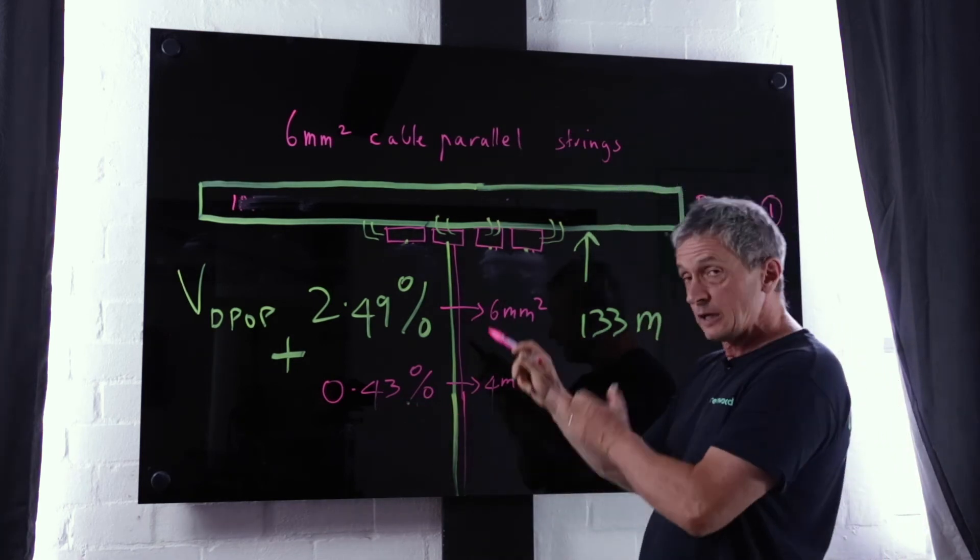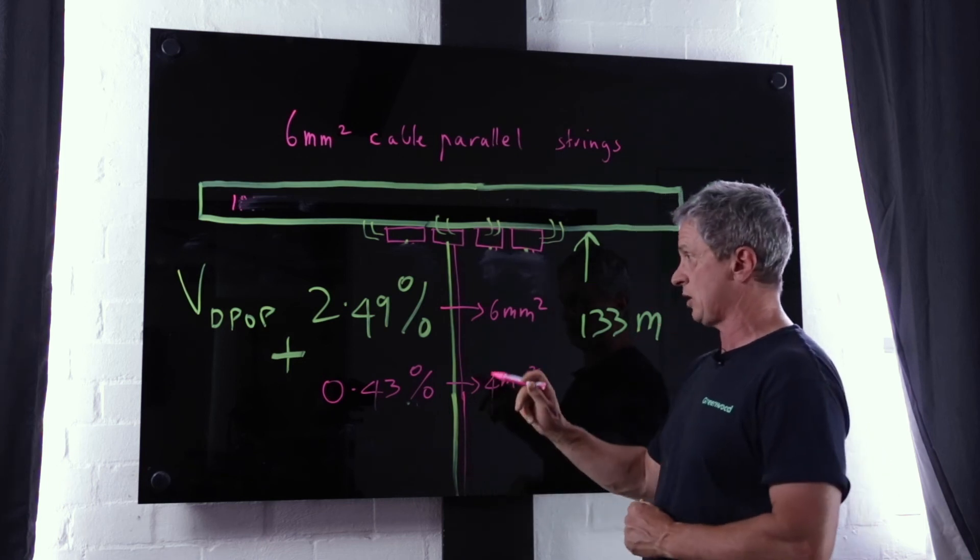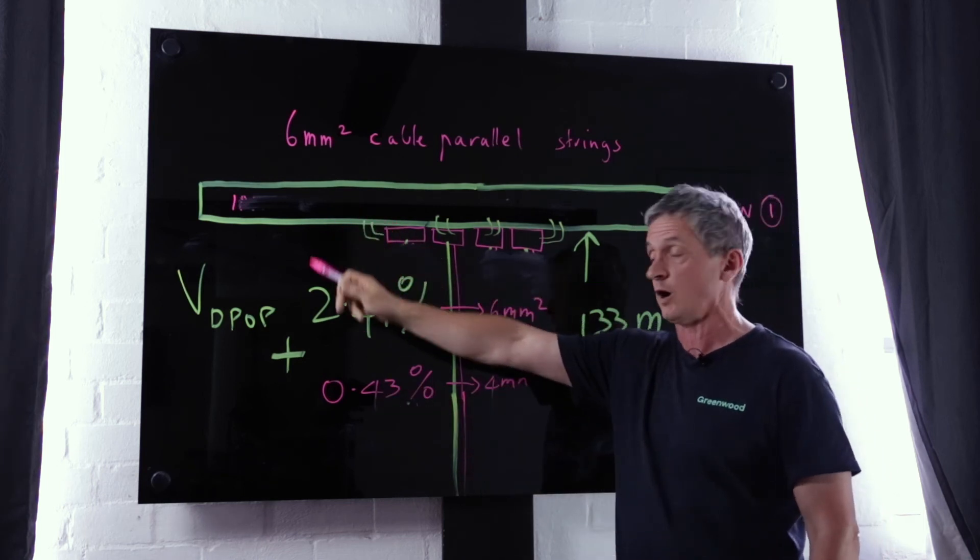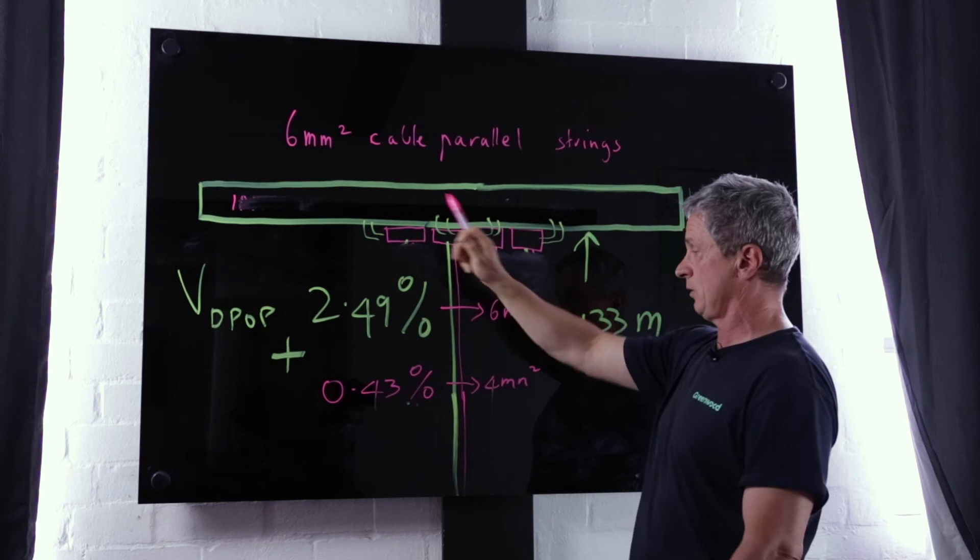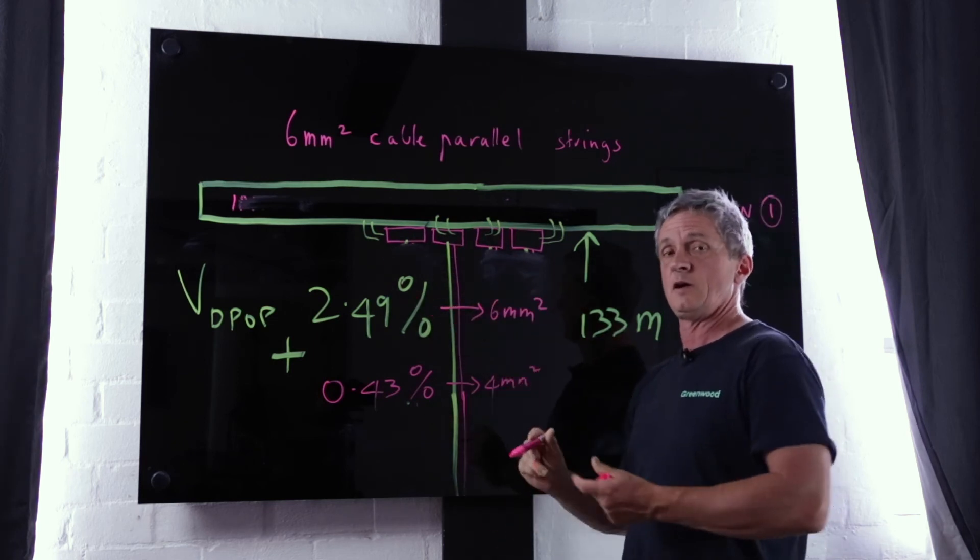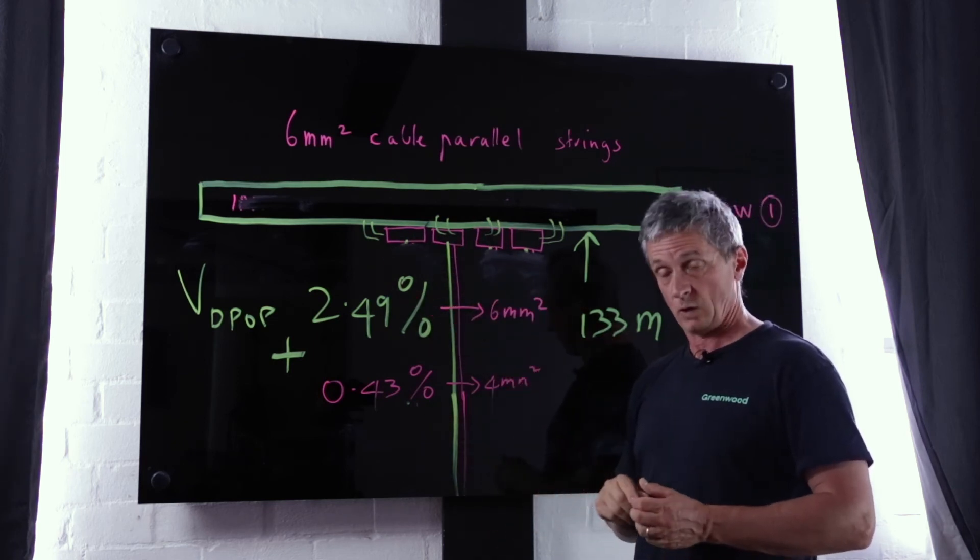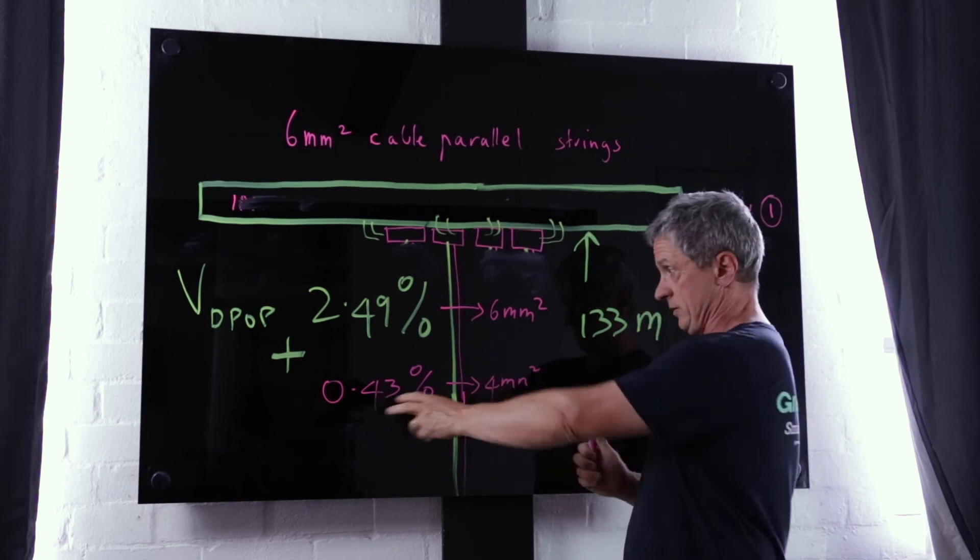With a design that does not parallel we can only use 4mm squared as a minimum. If we parallel the minimum we can use is 6mm squared on the longest runs.